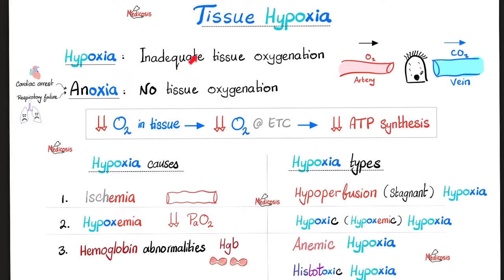Tissue hypoxia is defined as inadequate or less tissue oxygenation. Anoxia means no tissue oxygenation. Anytime there is less oxygen in the tissue, there will be less oxygen in the mitochondria and less oxygen in your electron transport chain, meaning the electron transport chain fails and you cannot make ATP — your chances of survival are dismal. Another classification divides hypoxia into hypoperfusion or stagnant hypoxia, hypoxemic hypoxia, anemic hypoxia, and histotoxic hypoxia. All of this was discussed before in previous videos in great detail.